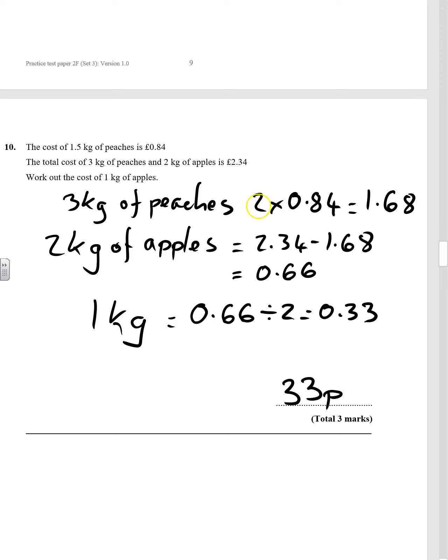So we doubled it to get three kilos of peaches, took that away from the total to get the price of two kilos of apples, and then divided it.